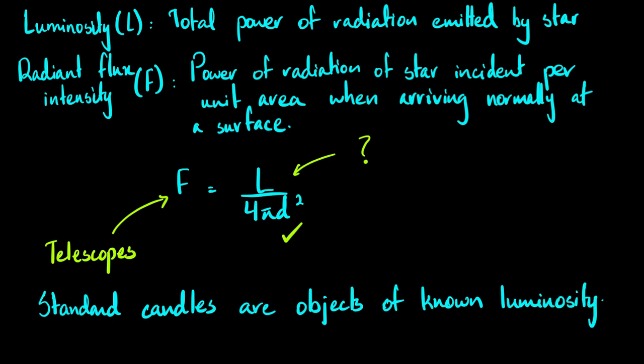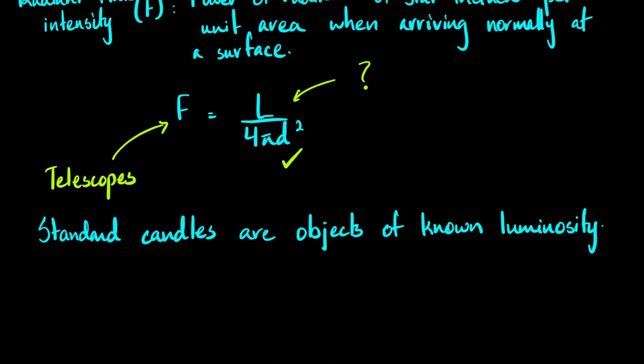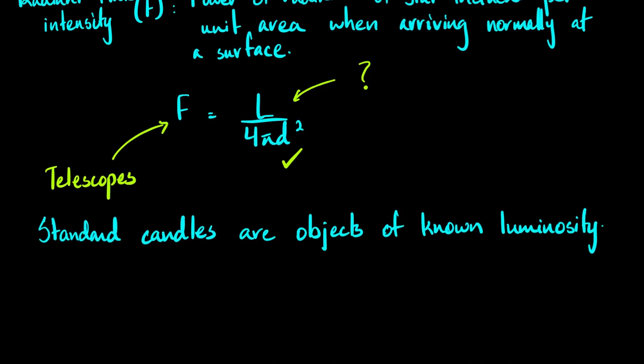Standard candles are objects of known luminosities. Once you know the luminosity of a standard candle, using this formula you can rearrange to find the distance of that standard candle from Earth. Majorly, there are two types of standard candles. These are not really part of your syllabus, but let me go through them because this can be asked in a question. It's better if you have some knowledge beforehand to help you tackle that question better.